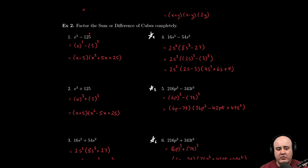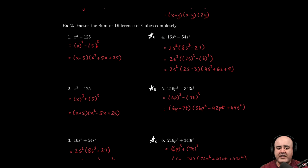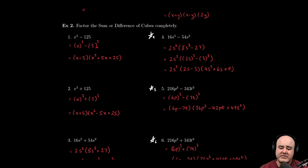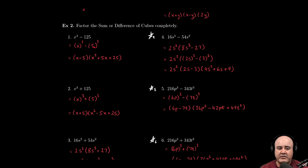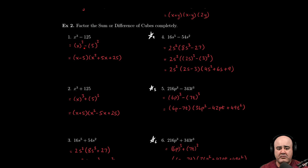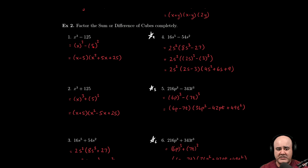Now what would we cube to get 125? We would cube 5. 5 times 5 is 25, 25 times another 5 is 125. And now because we can rewrite this as a difference of cubes, we can apply the formula: a minus b times the quantity a squared plus ab plus b squared.